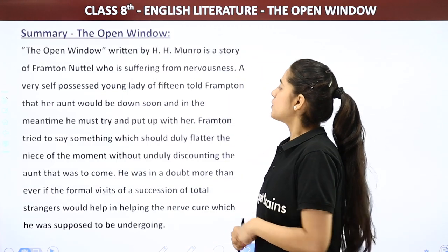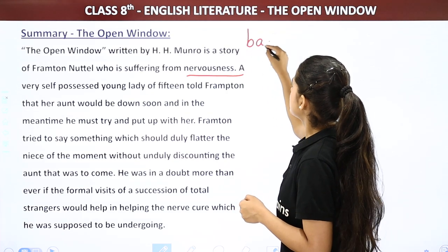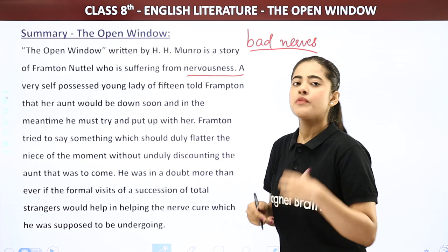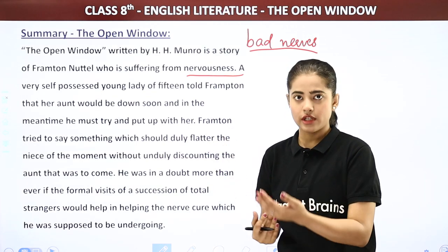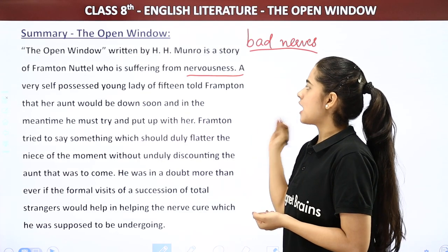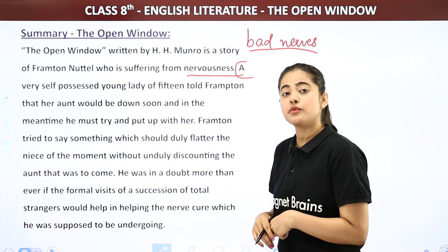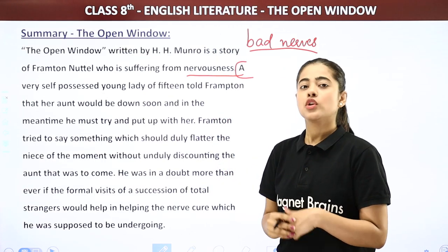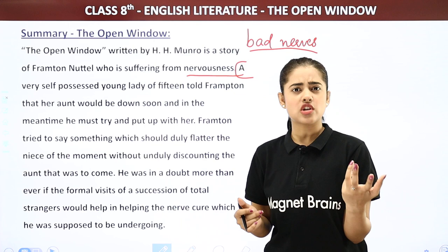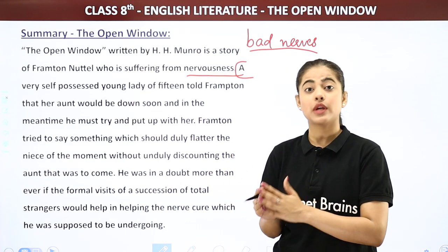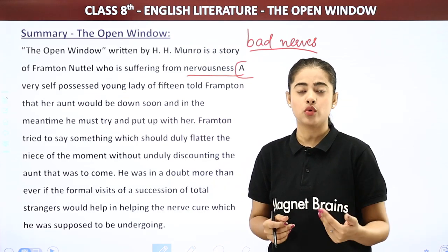The Open Window, written by H.H. Munro, is a story of Frampton Nuttel who is suffering from nervousness — 'bad nerves,' meaning a nervous disorder. He gets very anxious; it is a kind of anxiety disorder. He has this condition he is suffering from. Then, a very self-possessed young lady of 15 told Frampton — here the story's beginning happens. Before this, we should know that Frampton decided for a rural retreat, away from city life which is very busy and has no peace, so he can spend time without strain or stress on his brain and his condition can improve.